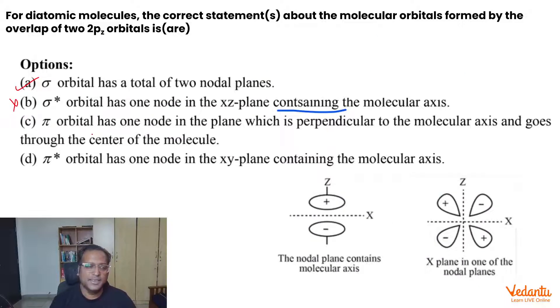Then option C: Pi orbital has 1 node in a plane which is perpendicular to the molecular axis and goes to the center of the molecule. When we make pi bonding, we understand that this x-z plane - if you call this x, this becomes y and this axis becomes z - the entire x-z plane is a nodal plane. This is not perpendicular to the molecular axis, this contains the molecular axis, so this is also wrong.